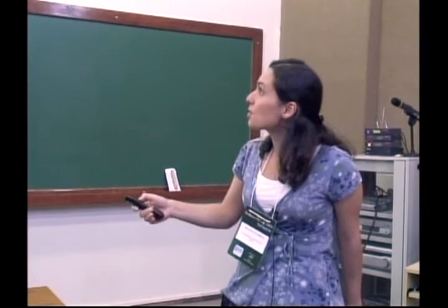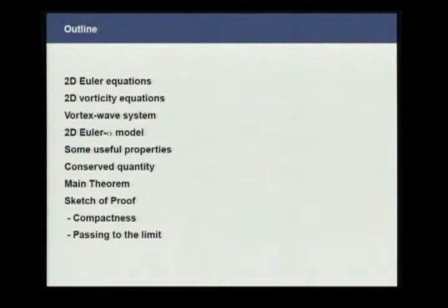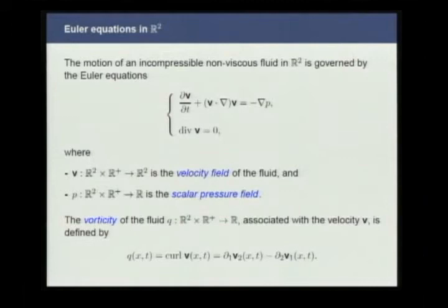I'll start by describing the Euler equations and the vorticity equations. I'll talk a bit more about the vortex wave system and the 2D Euler-Alpha model, give some useful properties and conserved quantities, state the main theorem, and give a sketch of the proof.